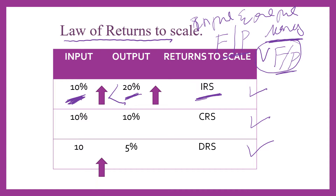In the second stage, by increasing 10 percent of input, output also increases by 10 percent. So output increases in the same proportion, equivalent to the increase in input. That stage we call constant returns to scale.